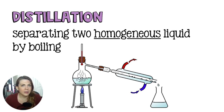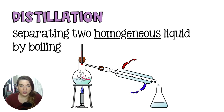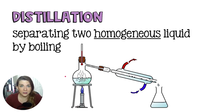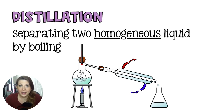I know water is 100°C. I'm not sure on the alcohol, but let's say it's 78°C. You would heat this mixture until it reaches 78°C, and then the alcohol would begin to boil. It's not yet hot enough for water to boil, so only alcohol would be boiling at this point.